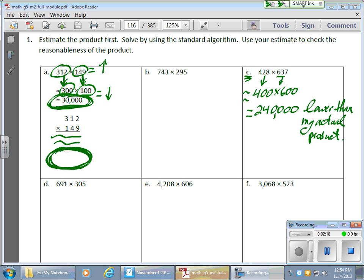And the reason why? Because I'm lowering both numbers. I'm lowering both factors. I'm taking 428, I'm making it 400. I'm taking 637, I'm making that 600. So my estimate's going to be lower, or my actual is going to be a higher number or higher value.